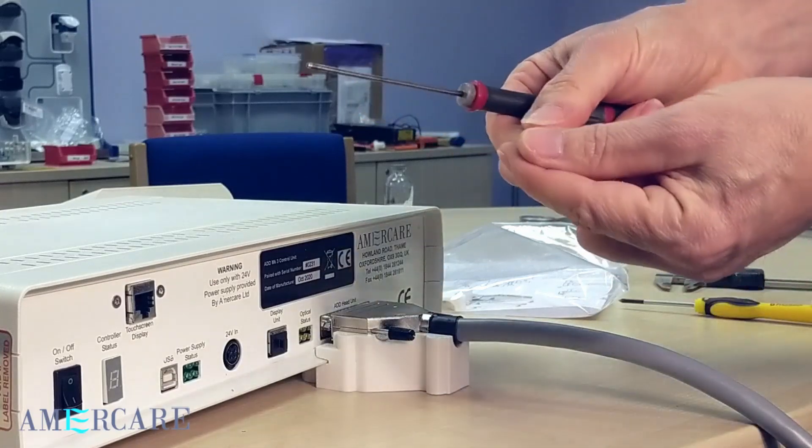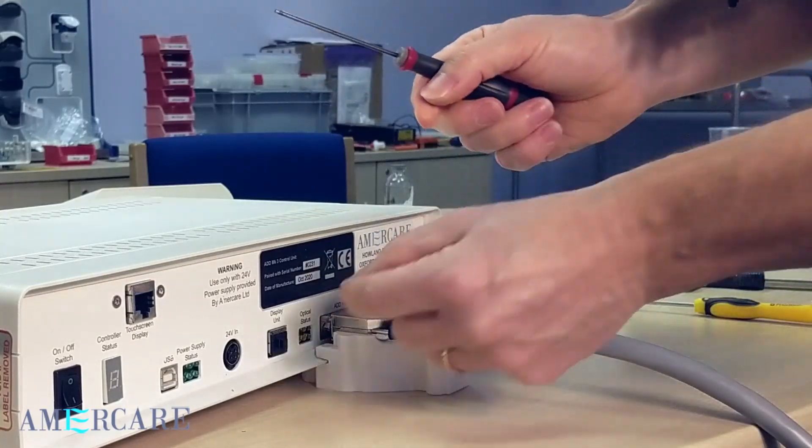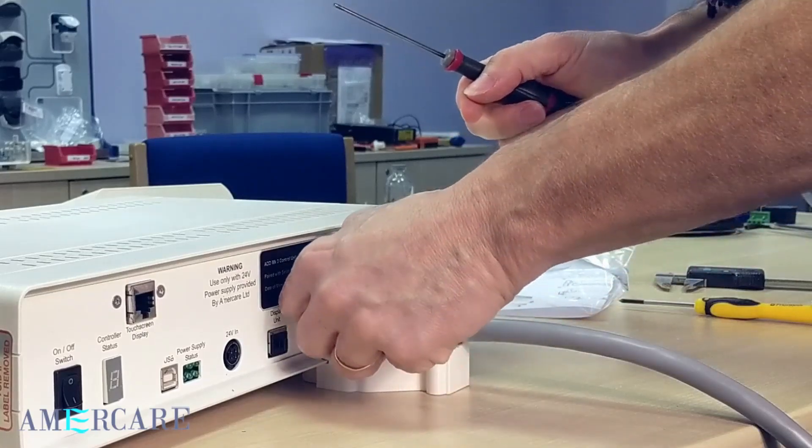This requires a 2.5mm Allen key. Simply drop the two screws into the holes and lightly tighten them down.